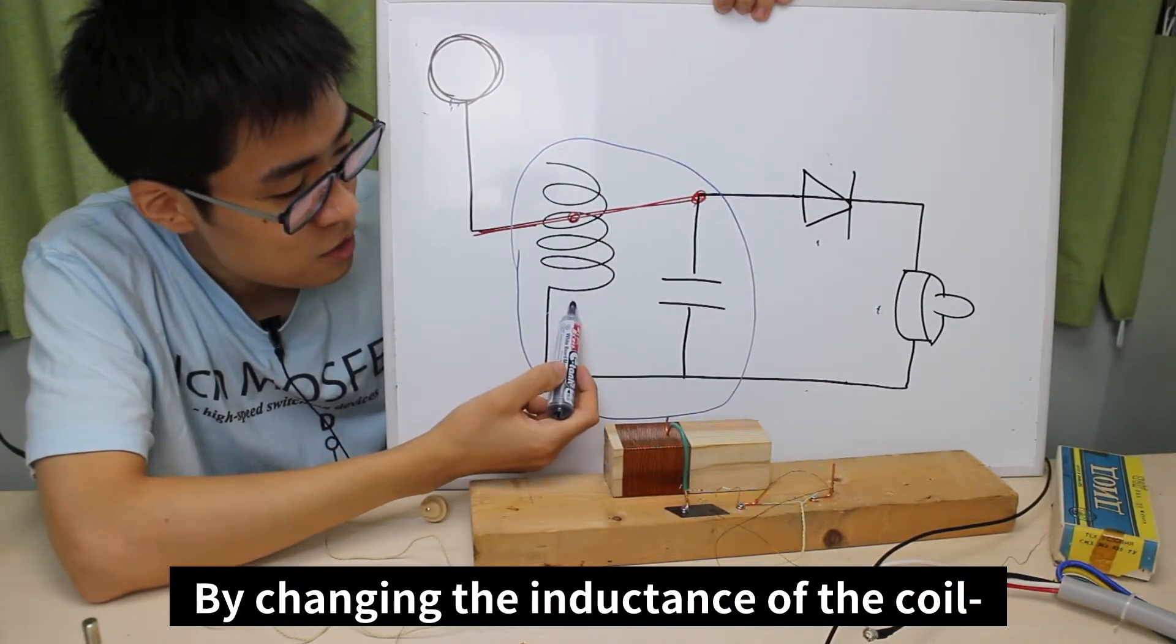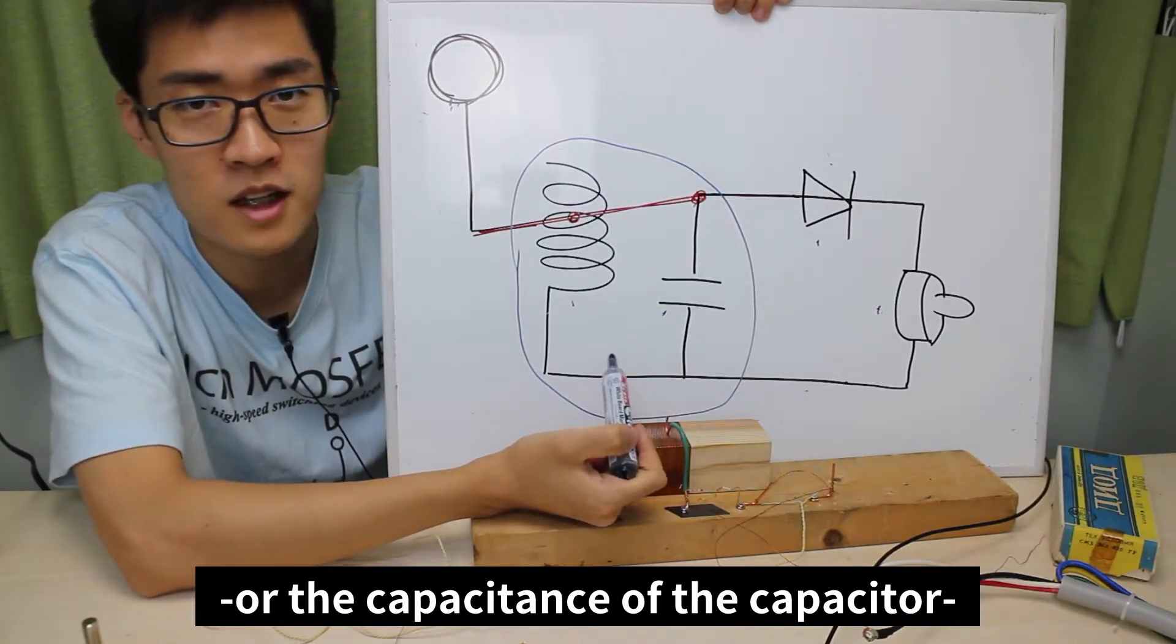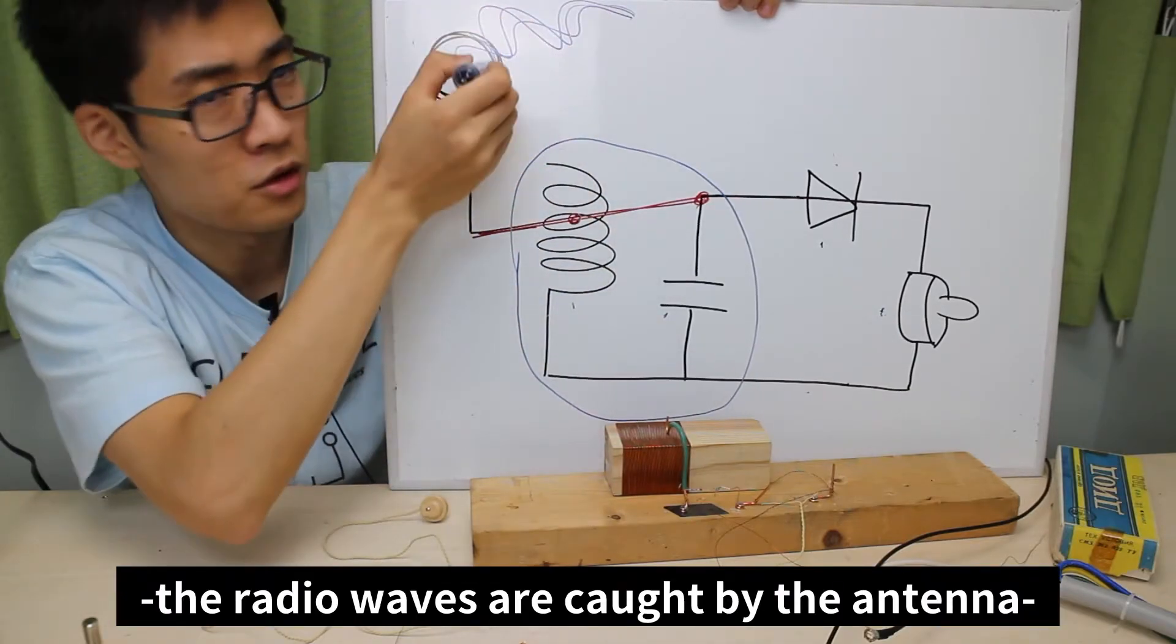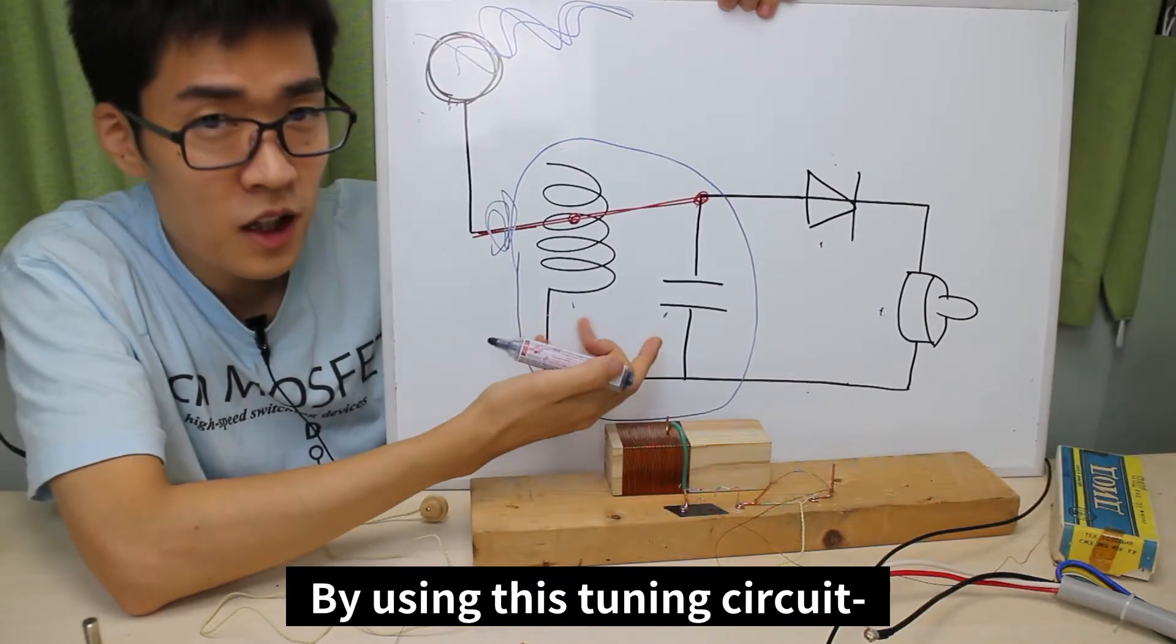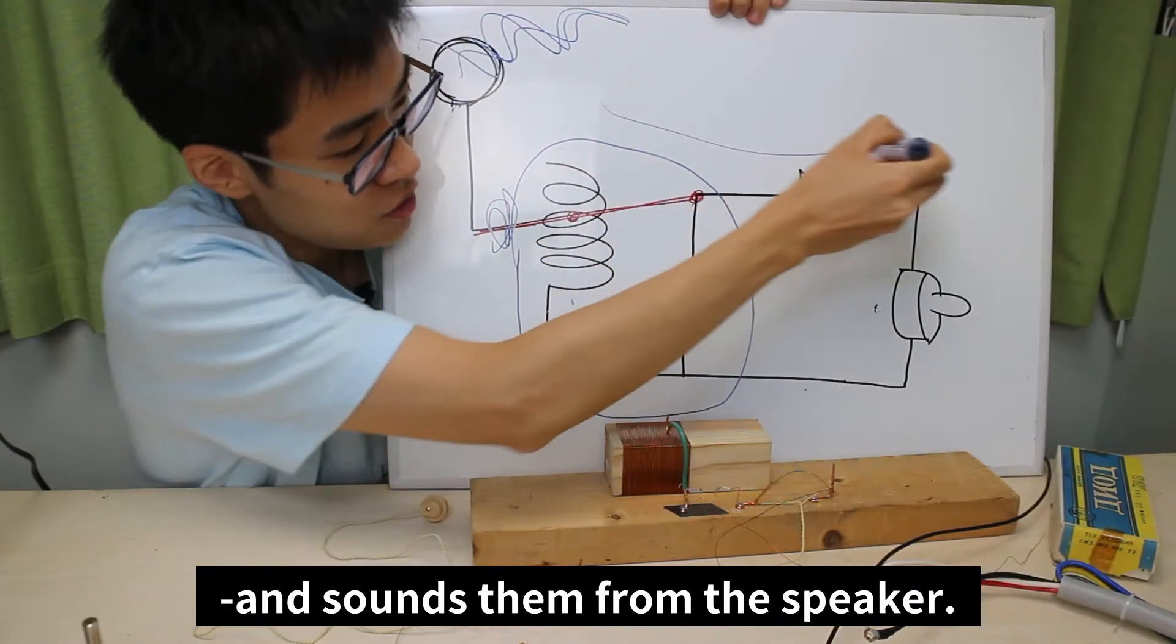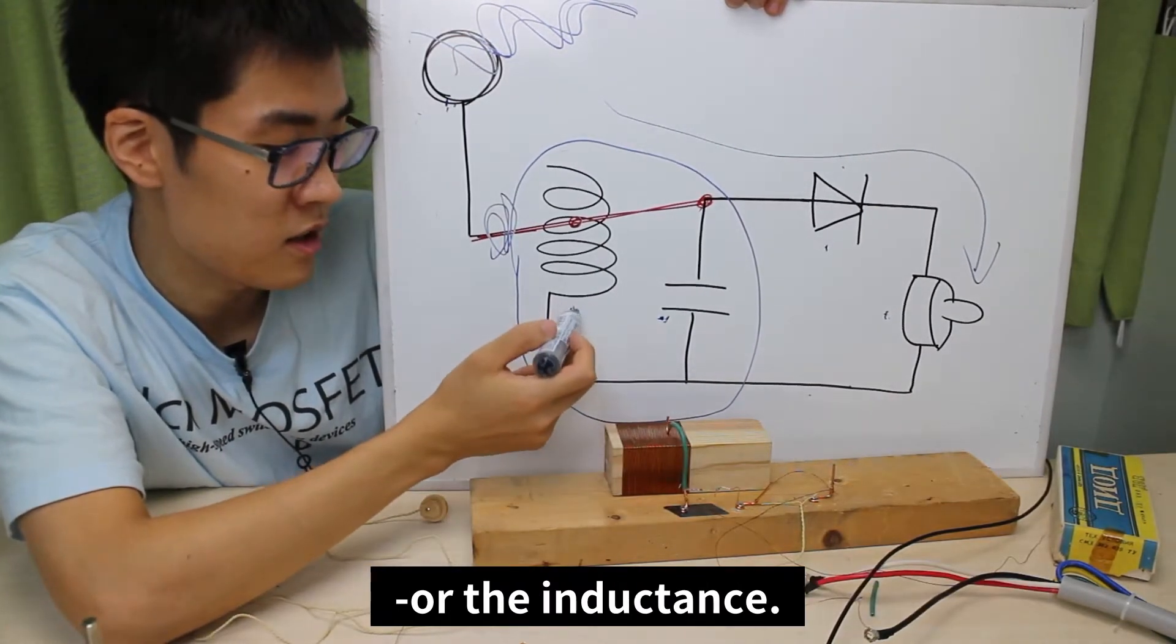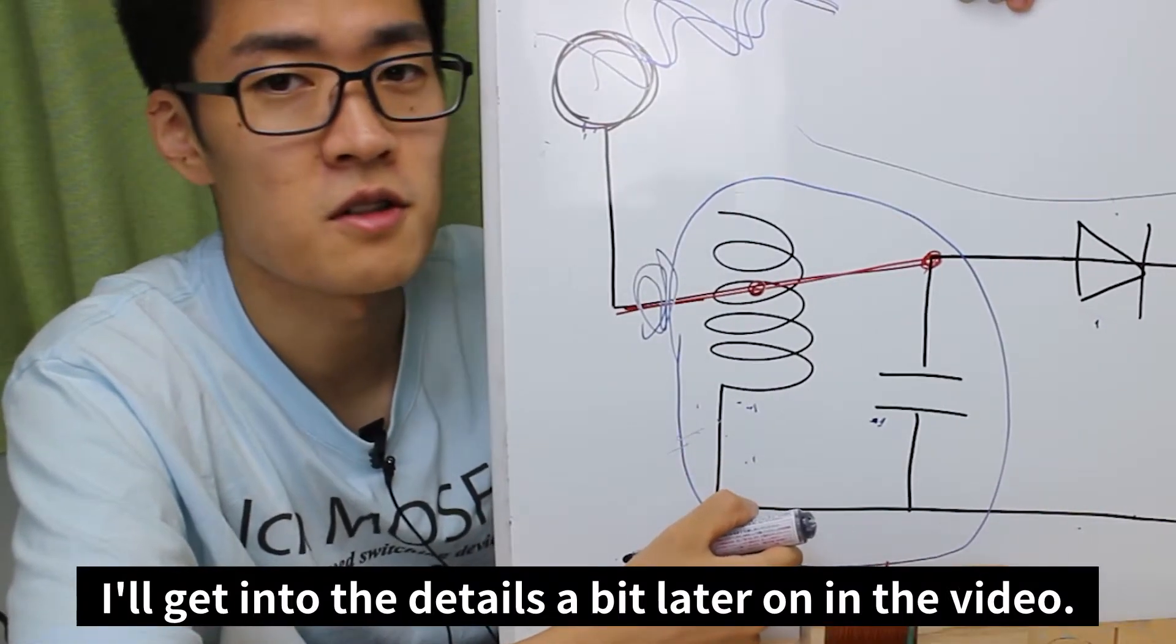The tuning circuit is this part of the illustration. By changing the inductance of the coil, or the capacitance of the capacitor, we can choose specific frequencies. So basically, the radio waves are caught by the antenna and the voltage flows here. By using this tuning circuit, we can choose radio stations of specific frequencies and sound them off from the speaker. To make this possible, we have to change either the capacitance or the inductance. I'll get into the details a bit later on in the video.